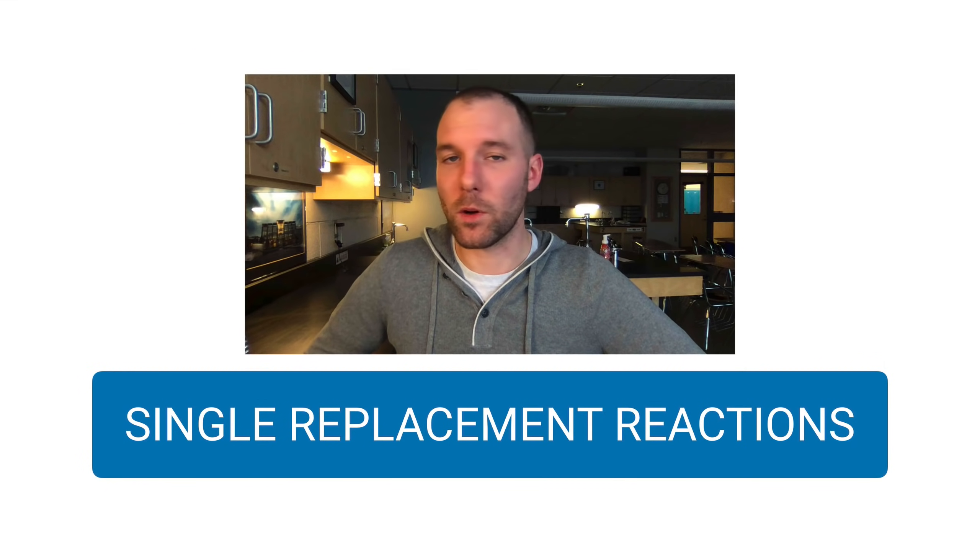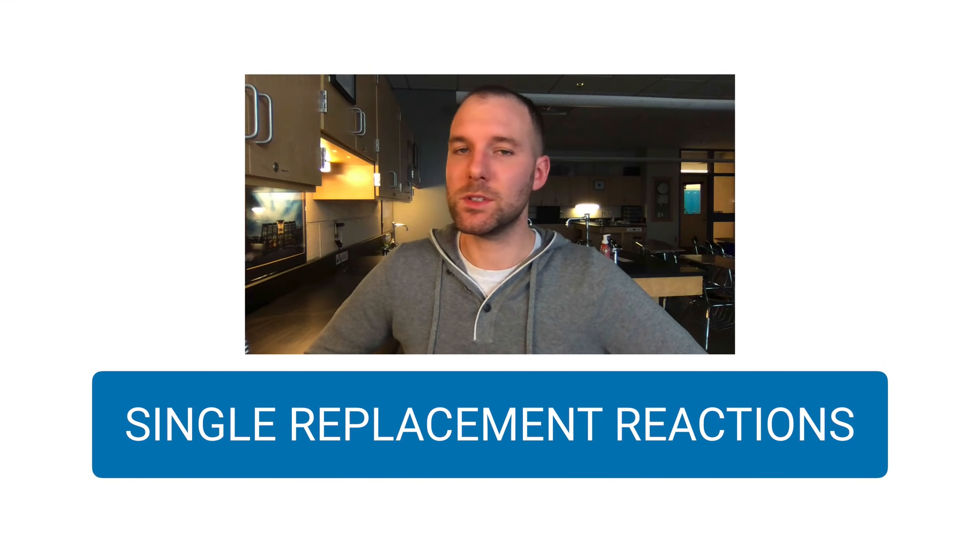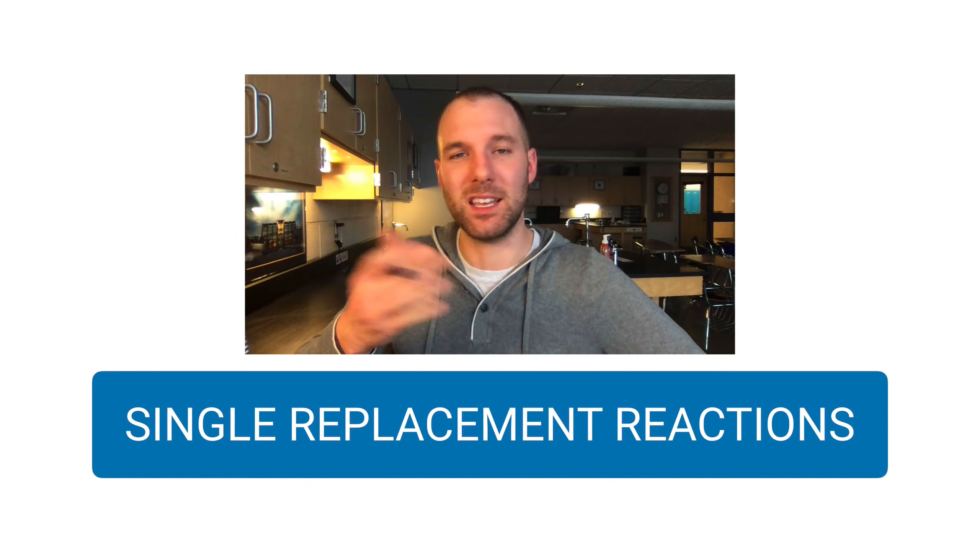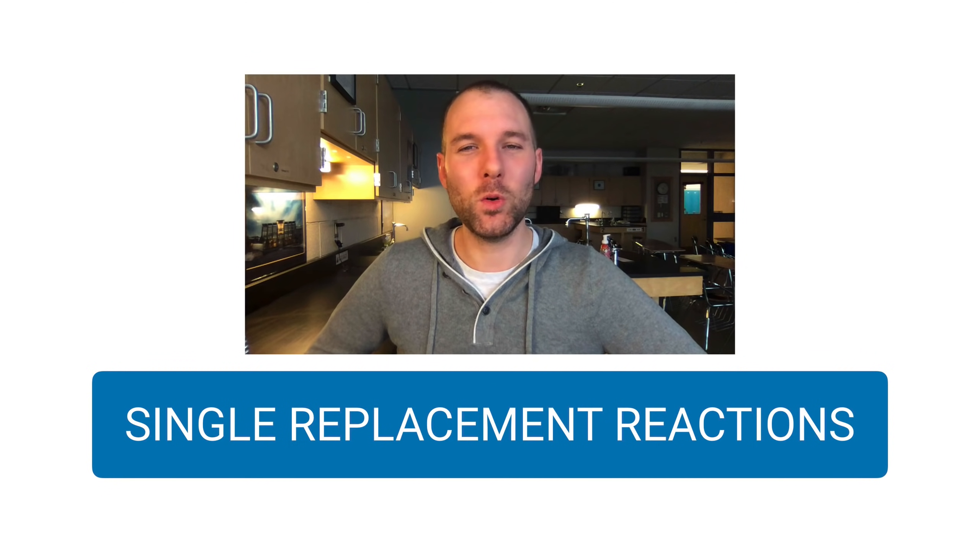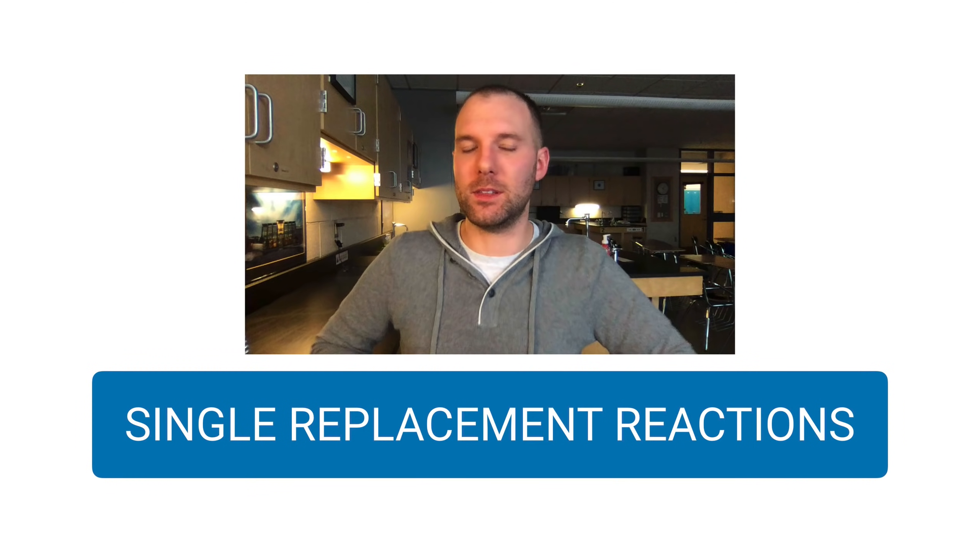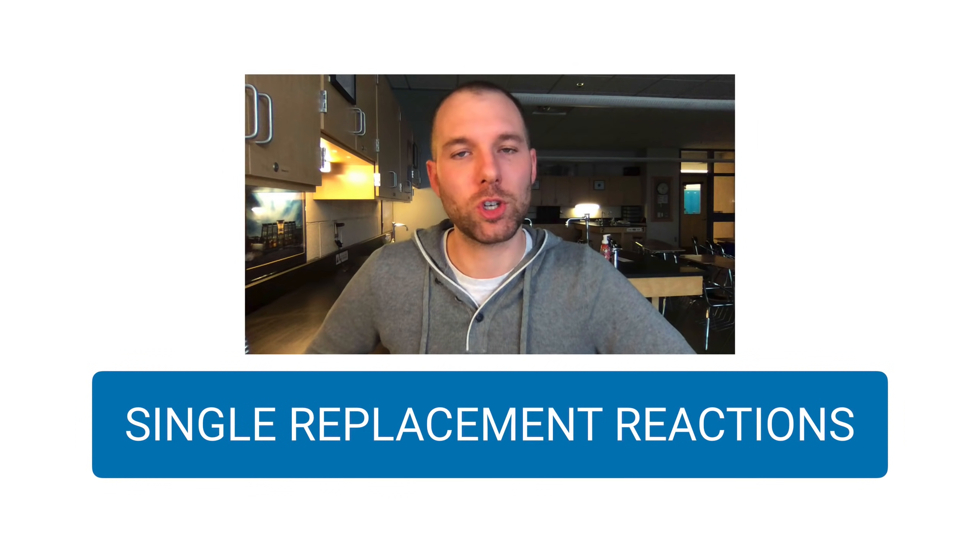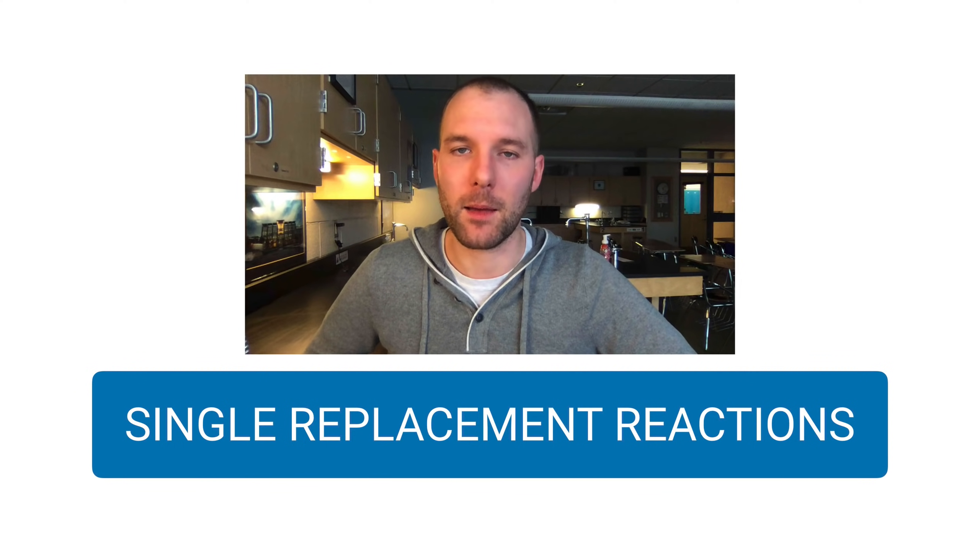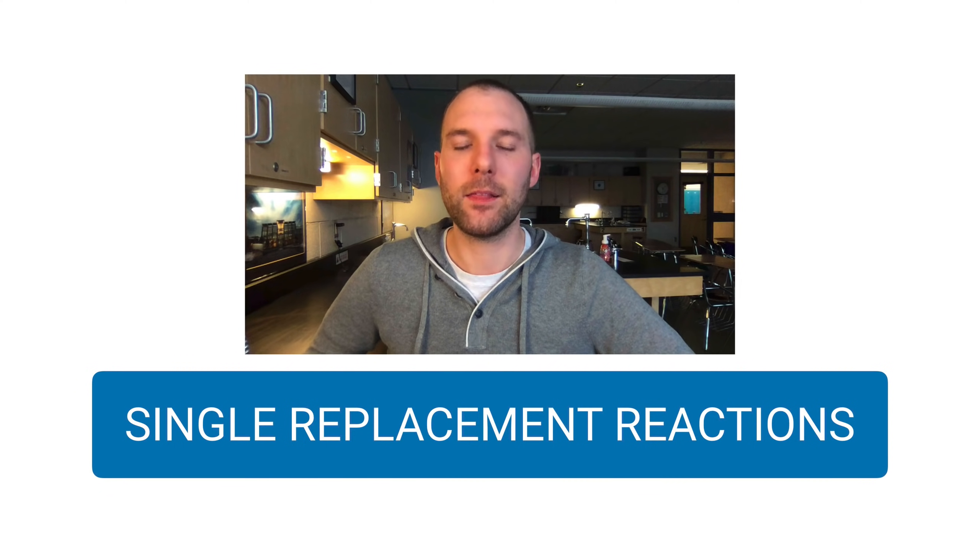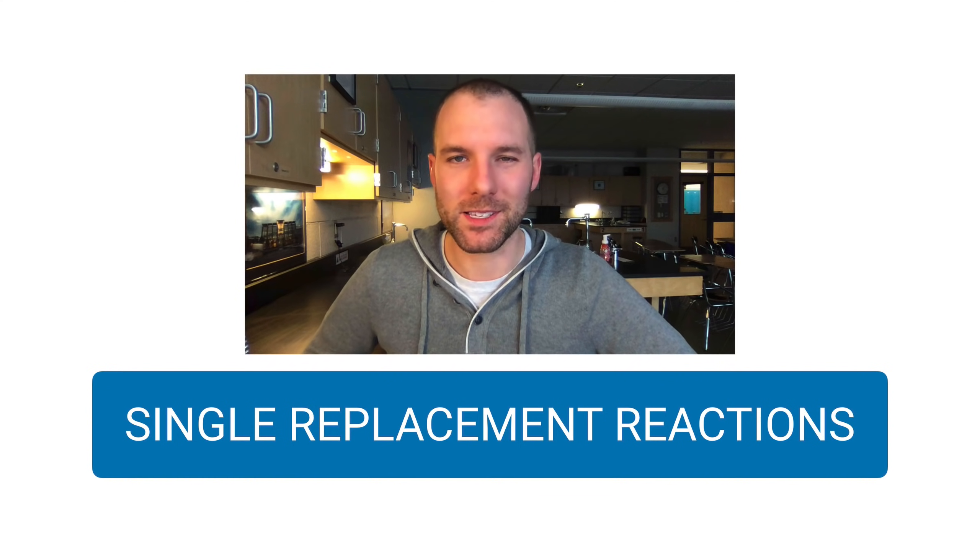So that's it. That's single replacement reactions. You have to use the activity series to first see if these reactions are even going to take place. Once they do, you can't just swap the letters in the formulas. You have to look at charges. Make sure you're coming up with the right formula for the resulting ionic compound. And once you do that, then you can balance. I hope this helped. Thank you.